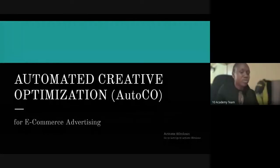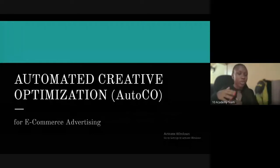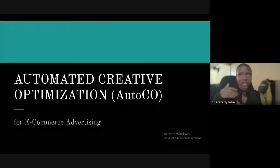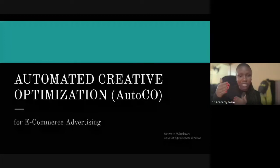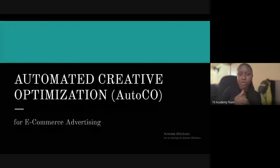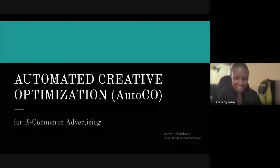When we talk about automated creative optimization, we're asking: with all the creatives and features you've extracted this week, which combination of features — which specific creative — will actually perform well? Performing well here means generating a higher CTR. We want users to actually see the ad, click it, and interact with it. Automated creative optimization focuses on which ad to show to increase that CTR.